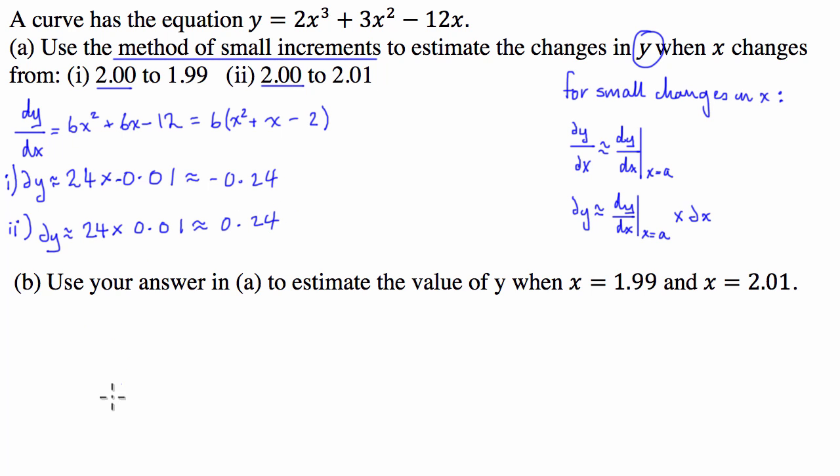Let's move on to part b: use your answer in a to estimate the value of y when x equals 1.99 and x equals 2.01. Basically what we can do is say the value of y when x is 1.99 is going to be equal to the function at 2 plus delta y. The function at 1.99 is going to be equal to the function at 2 plus delta y.